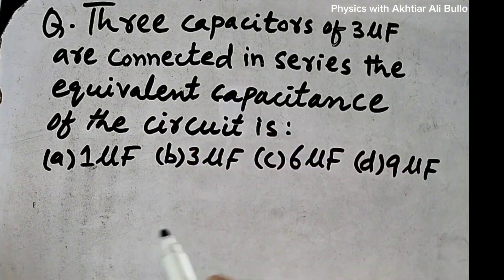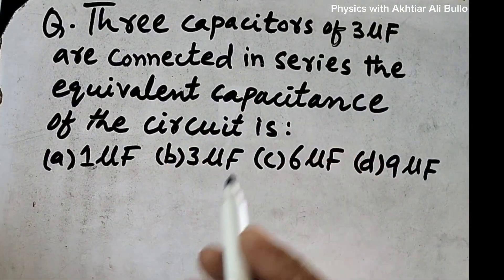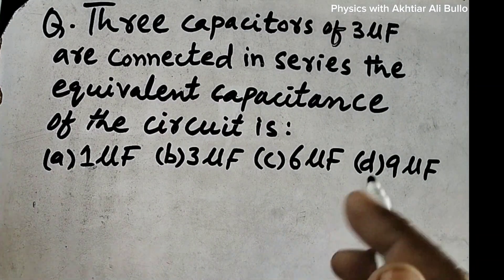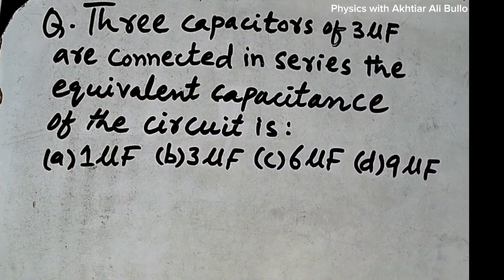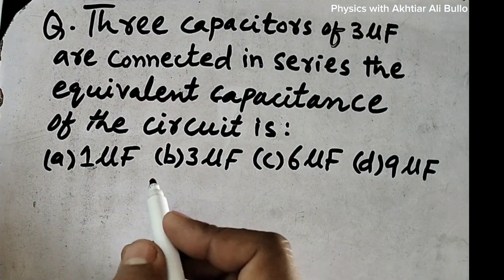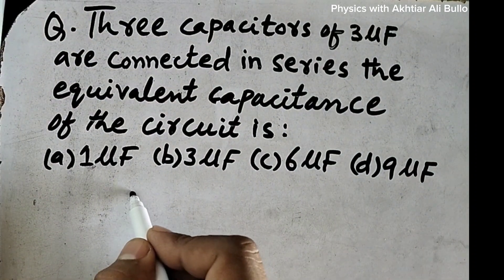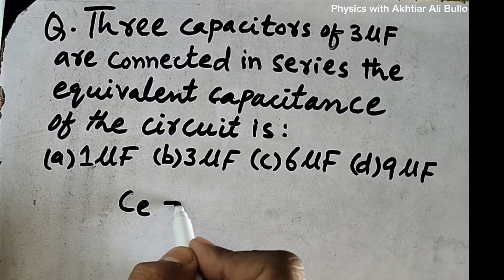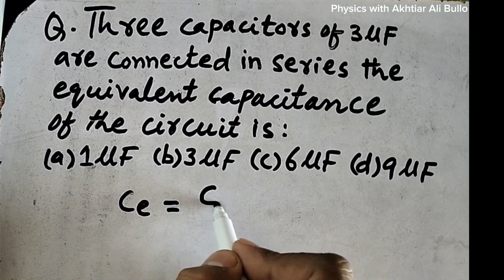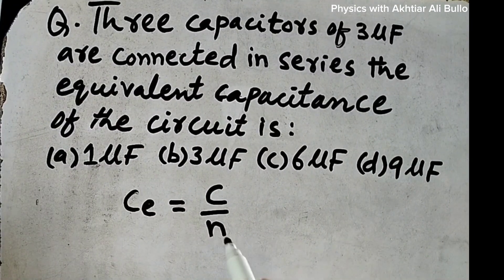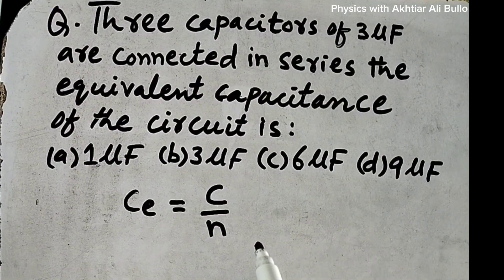When capacitors are connected in series and all the capacitors have the same value, we use the formula: equivalent capacitance is equal to C upon n. This formula is only for the condition in which all the capacitors have the same value.